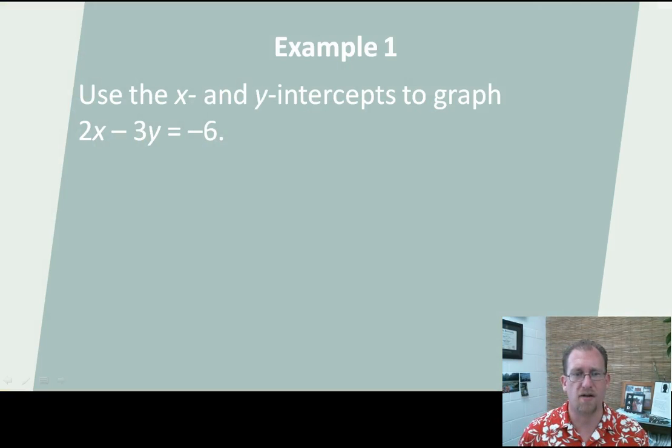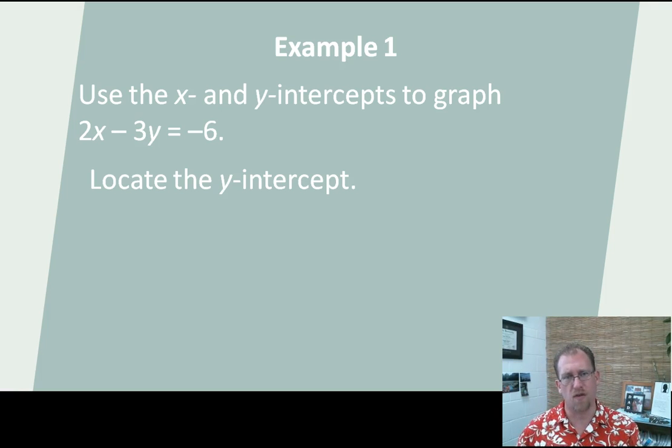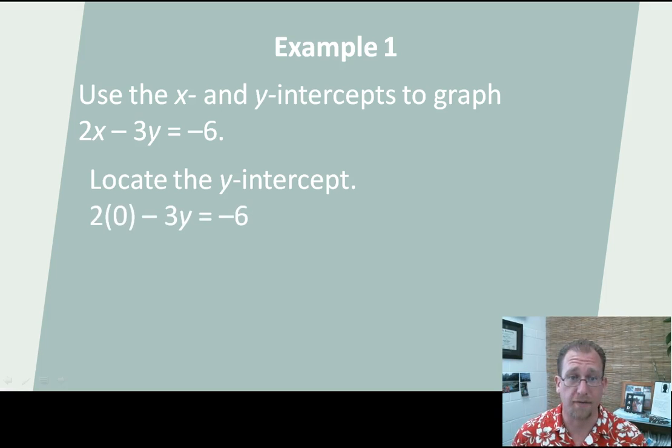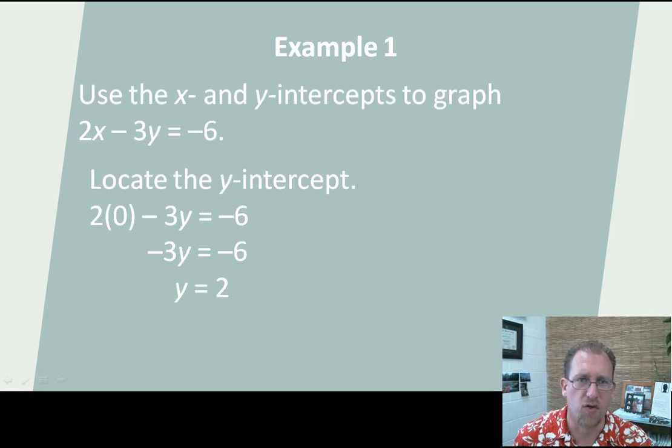Let's use the x and y intercepts of this line to graph it. 2x - 3y = -6. We're going to find the y-intercept first. The y-intercept is where the line crosses the y-axis. That's where x equals 0. So we're going to put x in as 0 and solve for y. And if we do so, we find that y equals 2. So on our Cartesian system, we could put a point in at 0, 2, and we would know it crosses the y-axis there.